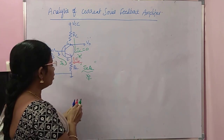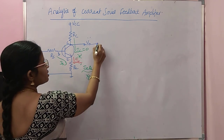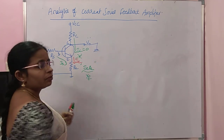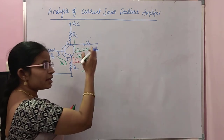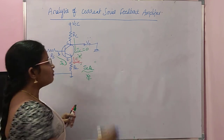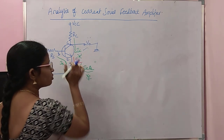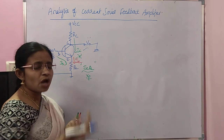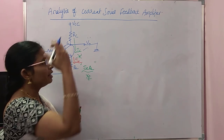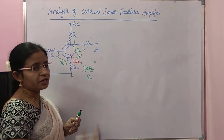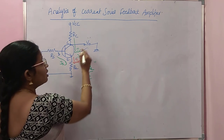Why is it not voltage sampling? Suppose if V0 is equal to 0, that makes voltage equal to 0, but there still exists IC. That IC flows through RE and does not make XF equal to 0. That is the reason it is not voltage sampling but current sampling.